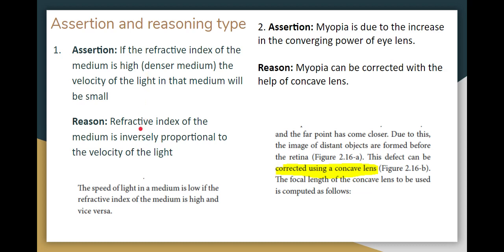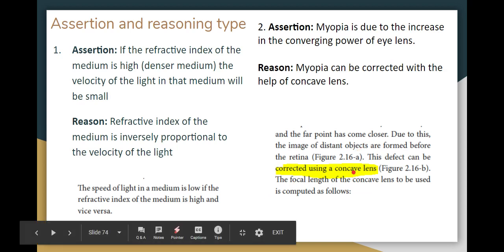Assertion and Reasoning: Myopia involves an increase in the converging power of the eye lens. It can be corrected using a concave lens — the reason is correct. Both assertion and reason are correct, and the reason correctly explains the assertion.